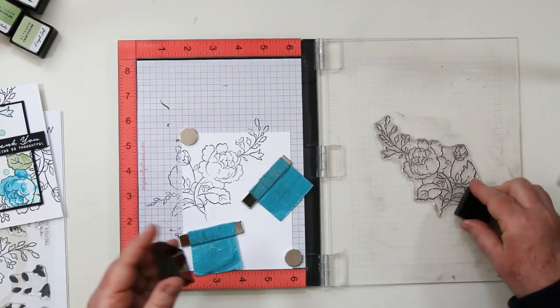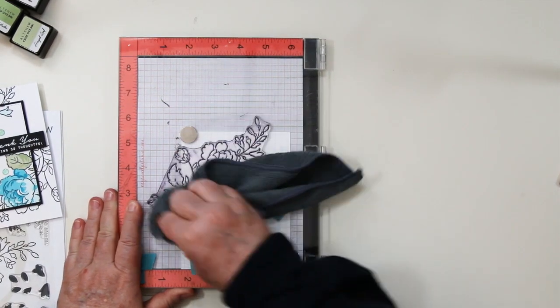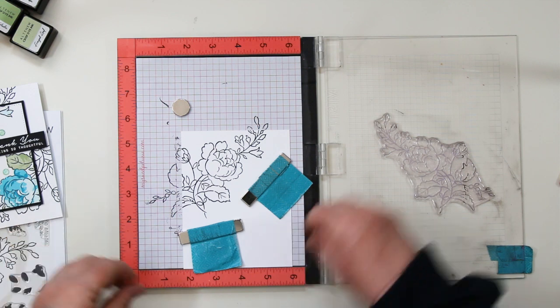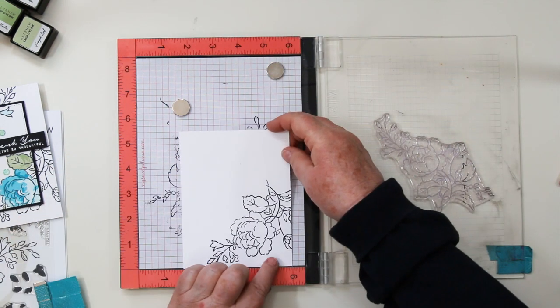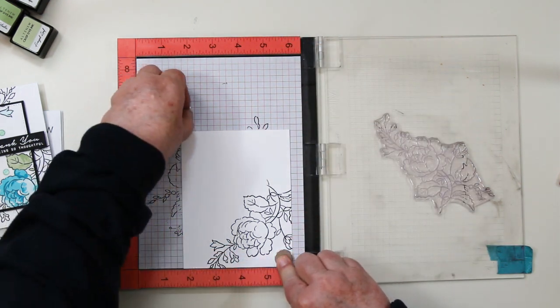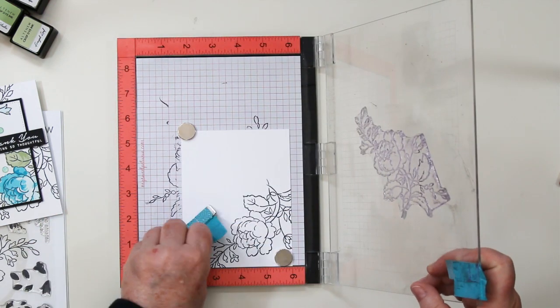Here's my second one. I'm about to show you something really cool with the Misti. Leave that stamp right where it is, pull those magnets off, flip that piece of paper around, line it up with the six in the bottom right-hand corner and use the line on the grid paper. Add your magnets back in, get the dog hair out of the way.